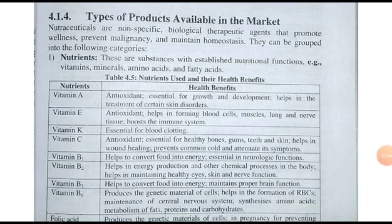Now the next topic is the scope of nutraceuticals. Nutraceuticals are extended to deliver promising outcomes in the prevention and occurrence of various diseases resulting due to improper lifestyle and food habits. Various constituents of plant life — catechin, carotenoid, lycopene, polyphenol, etc. — have been very effective in the prevention of various diseases like cardiovascular disease, arthritis, cancer, gastrointestinal disease, etc.